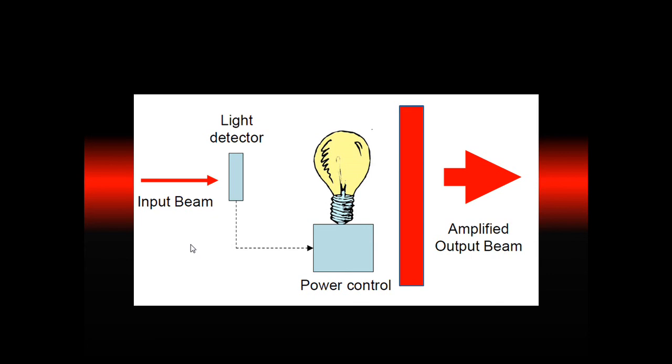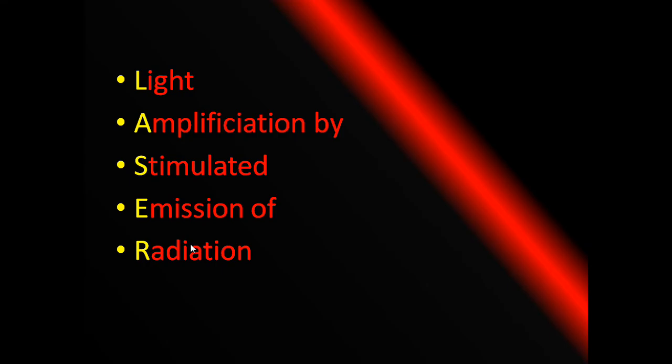How lasers work is all contained entirely within the name, light amplification by stimulated emission of radiation. To understand this, we must first look at atoms, which consist of a nucleus surrounded by electrons. These electrons are in their own discrete energy levels, or orbits.